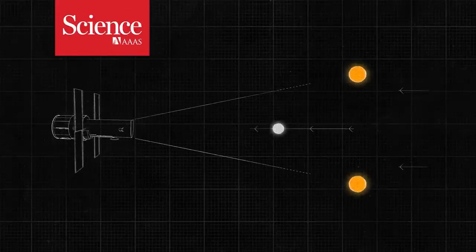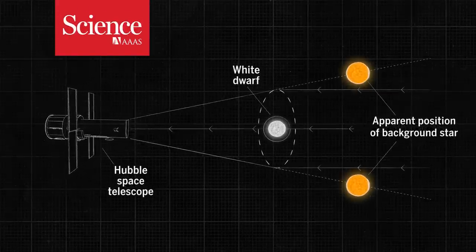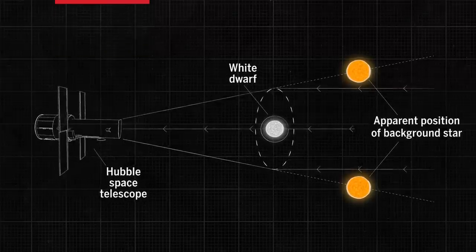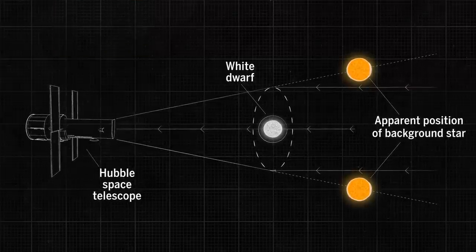A new observation of the bending of distant starlight by gravity has allowed researchers to weigh a white dwarf star, virtually impossible before now for an isolated star.